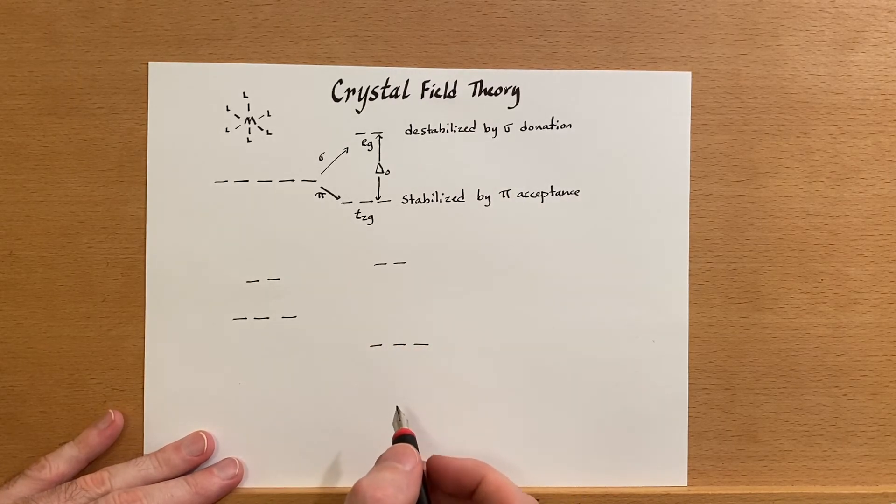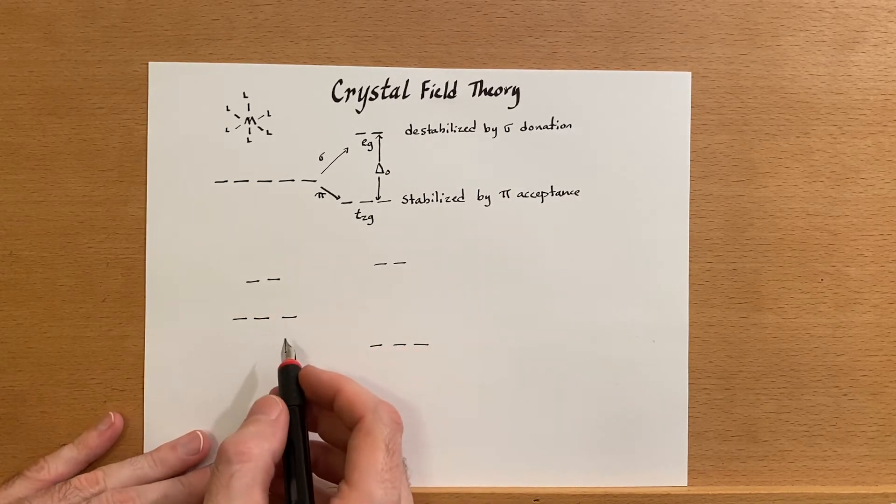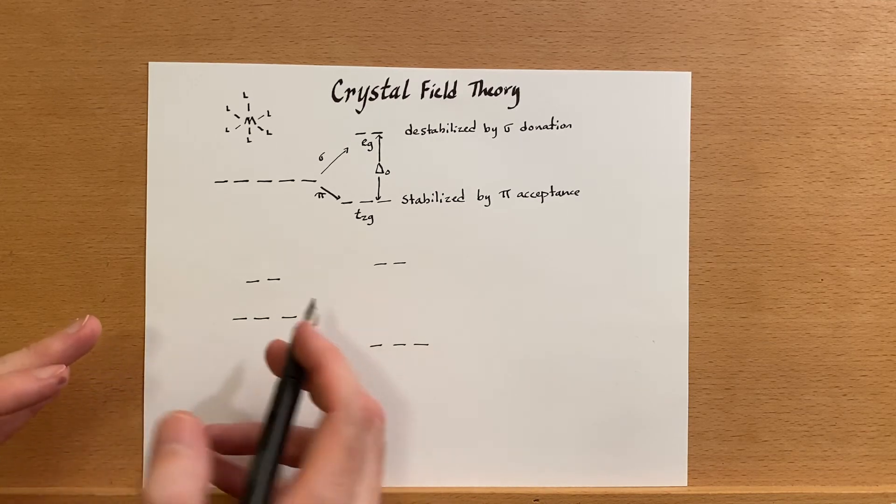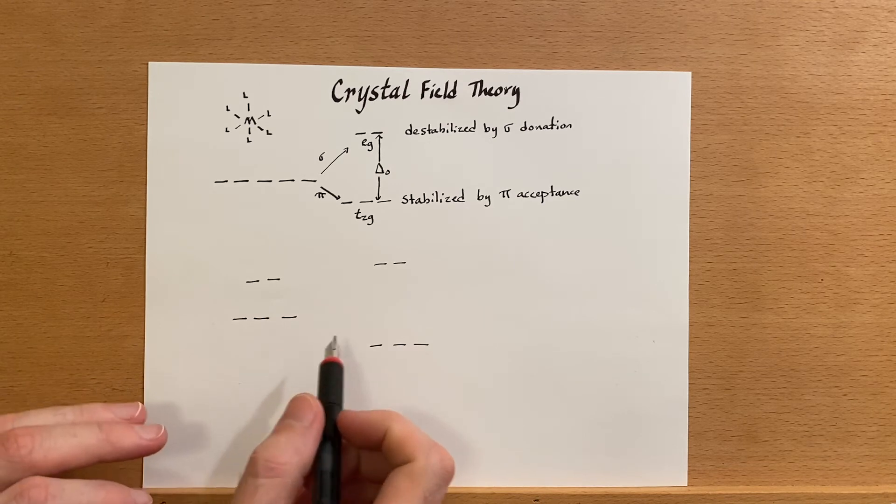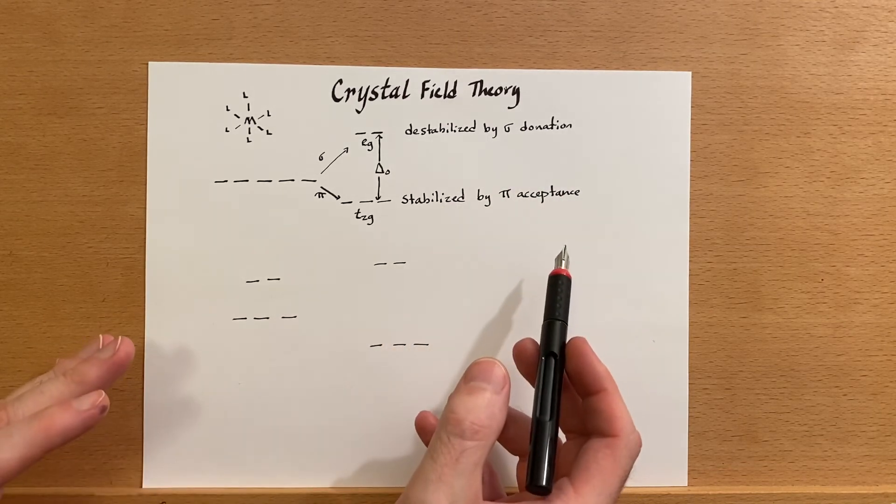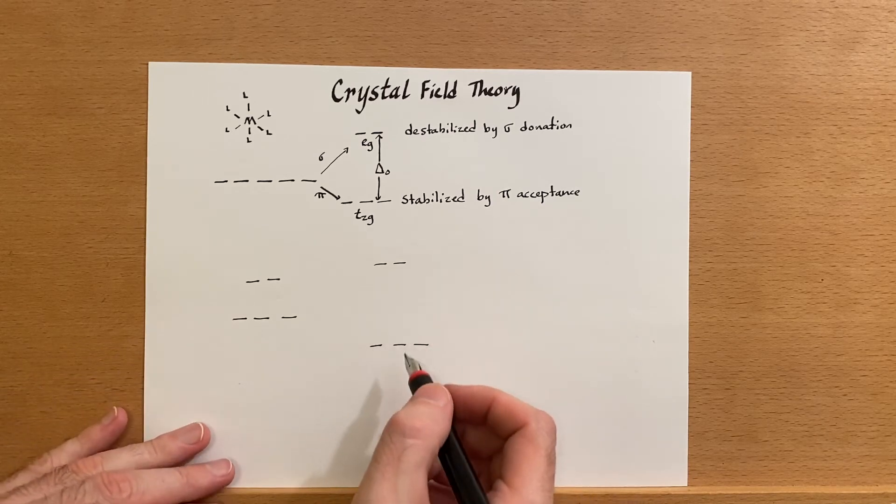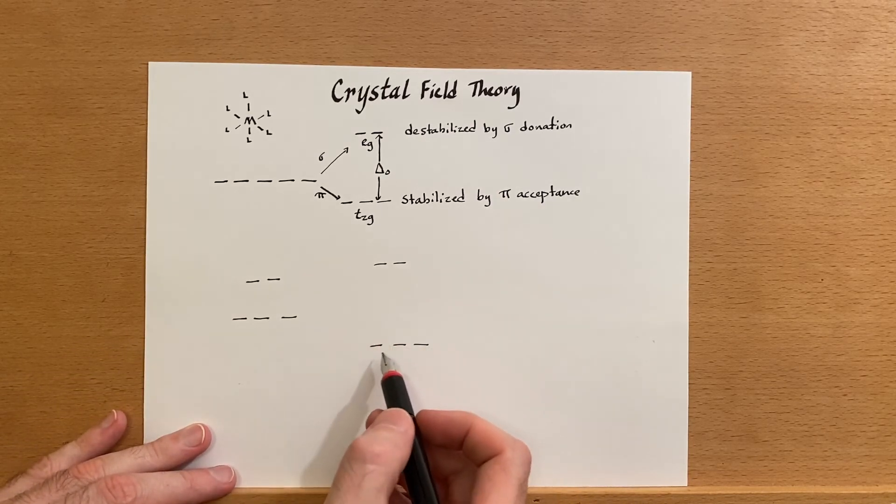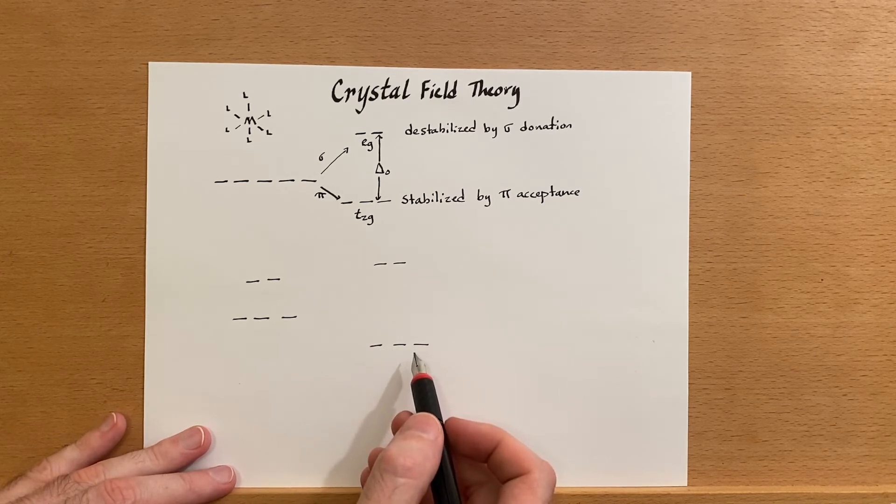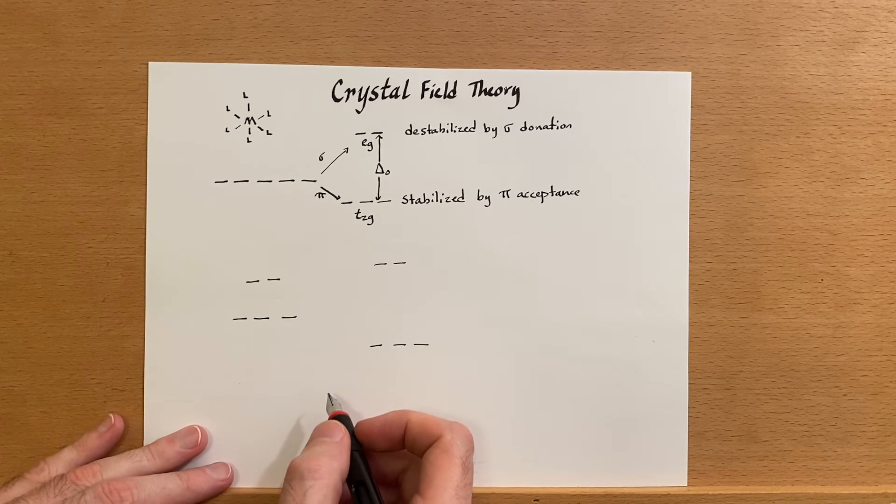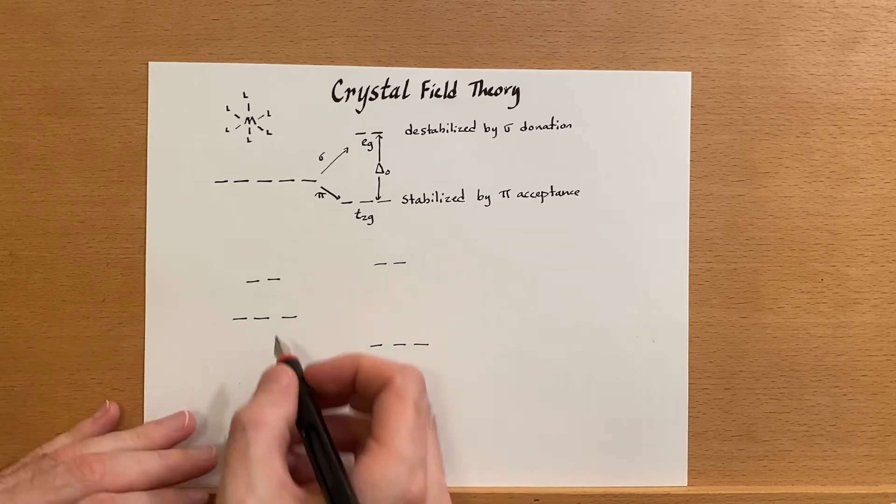I'm drawing two cases. This case we have a much lower delta octahedral - that is, the ligands aren't as strong, they don't have very good pi donation or sigma donation, and they don't have very good pi acceptance. Over here they do have very good sigma donation and pi acceptance, so that's why the energy gap is much larger. Now when we fill these orbitals...